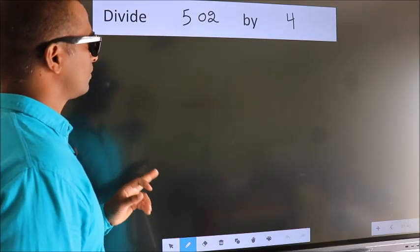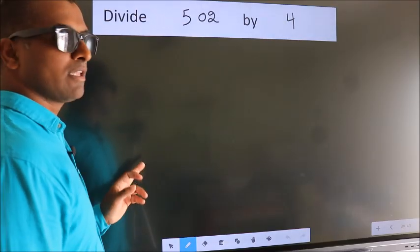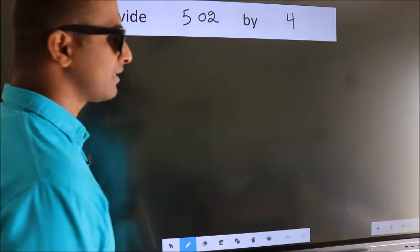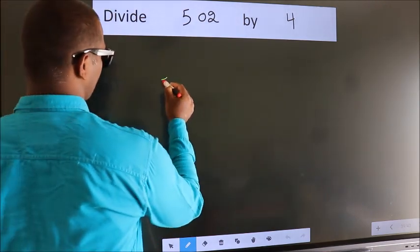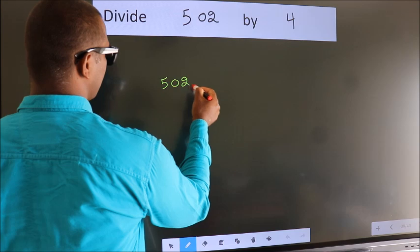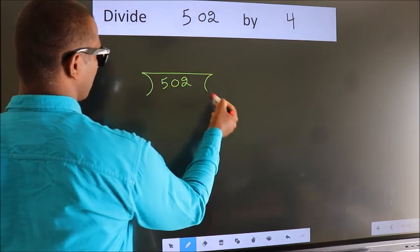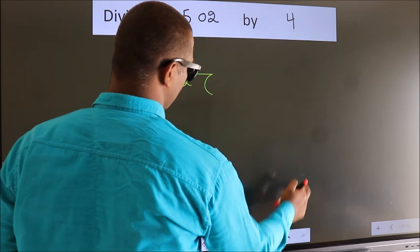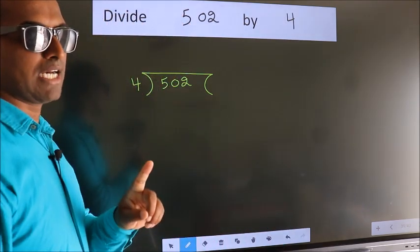Divide 502 by 4. To do this division, we should frame it in this way: 502 here, 4 here. This is your step 1.